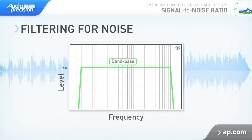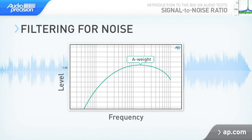A weighting filter may also be used, either alone or in conjunction with a band pass filter. Weighting filters apply one of a number of standard weighting equalization curves to the measurement, typically representing the response of human hearing. Any filtering used in a noise measurement must be stated as a component of the measurement conditions.